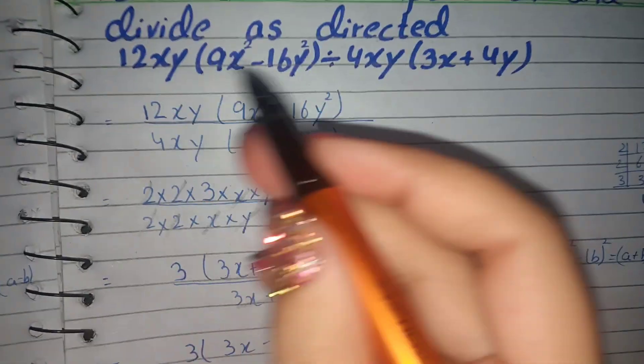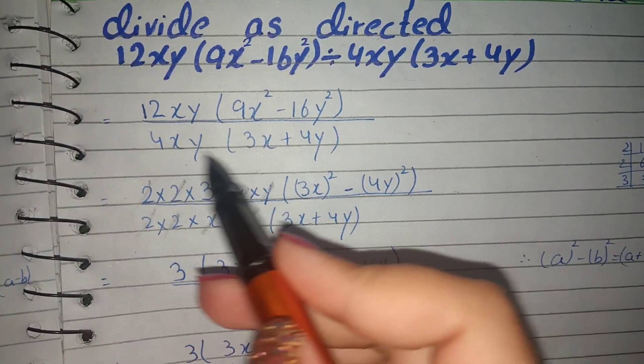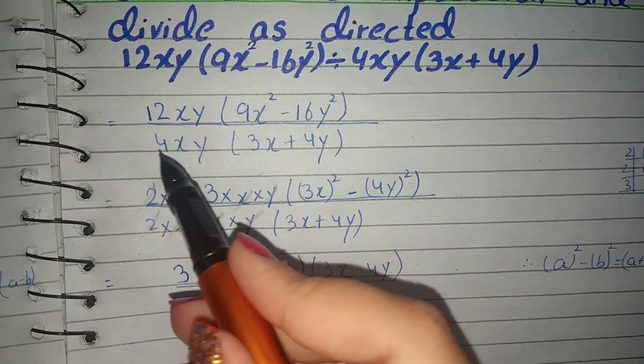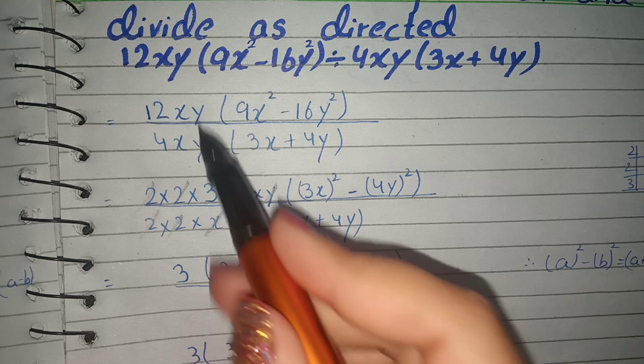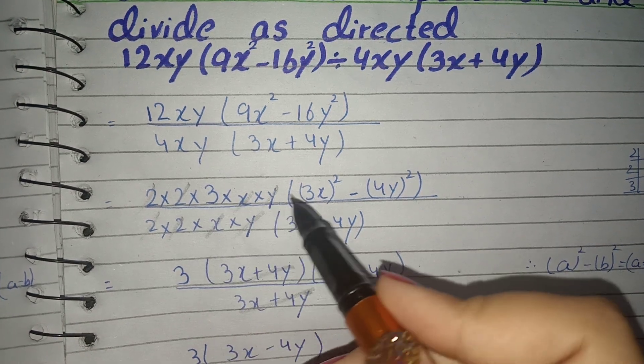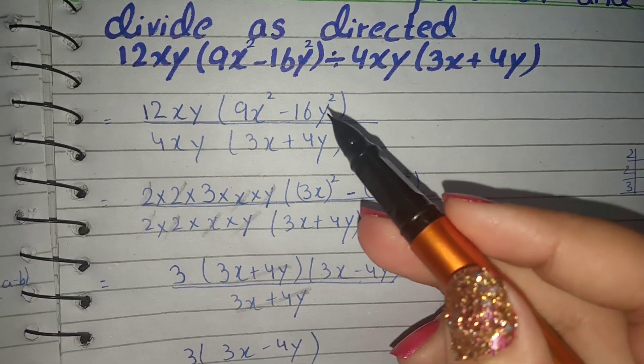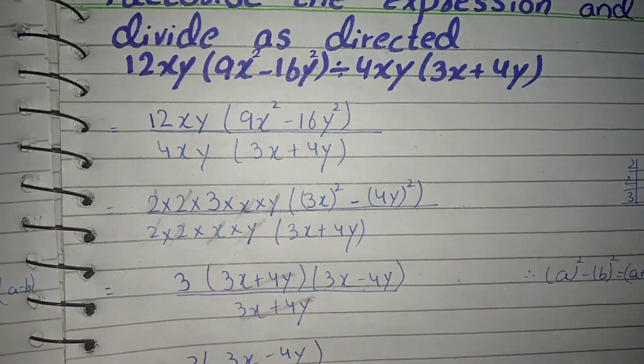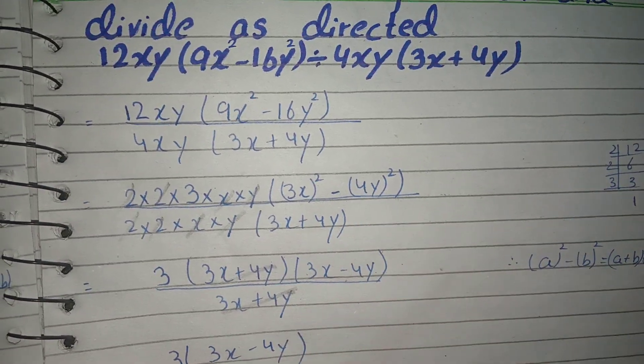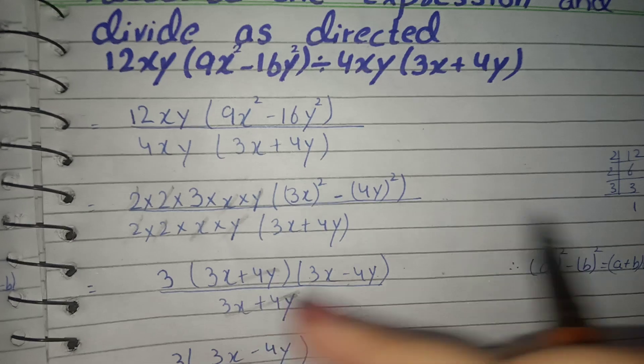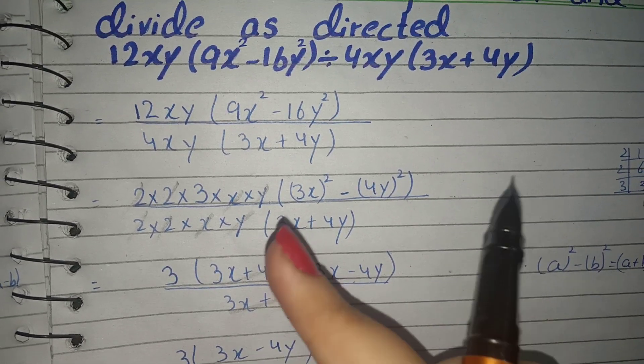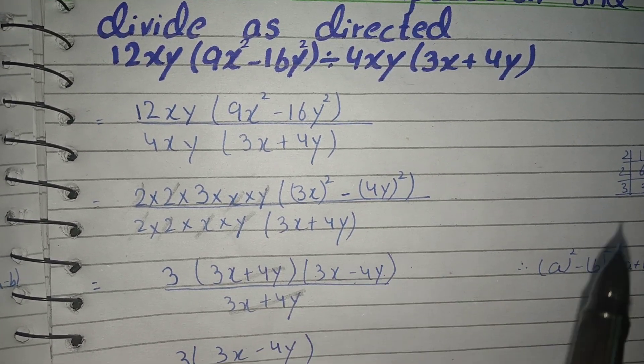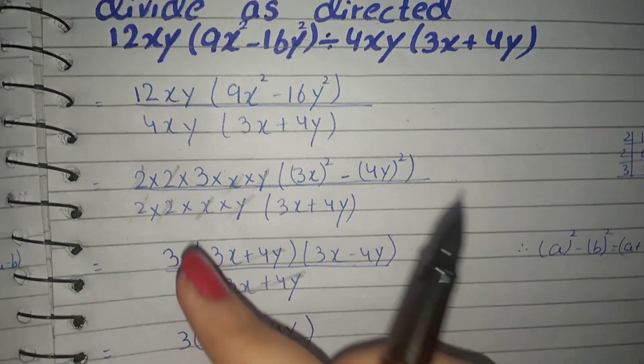To recap: I expanded 4xy as 2 times 2 times x times y. The 9x square minus 16y square is the difference of squares formula, which opens as 3x plus 4y times 3x minus 4y. Then we cancel common factors.